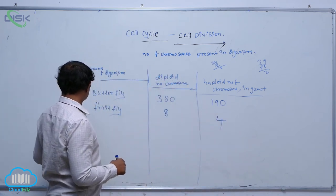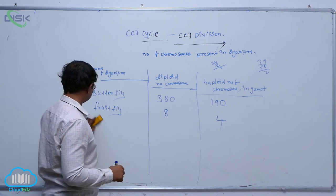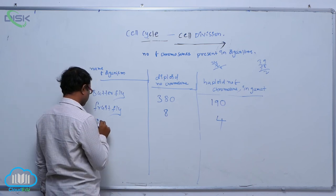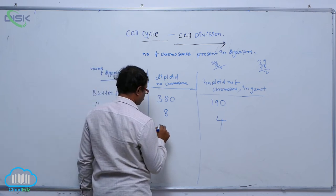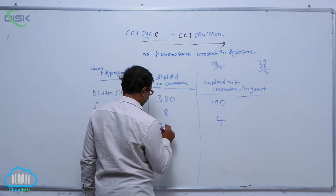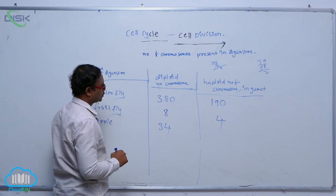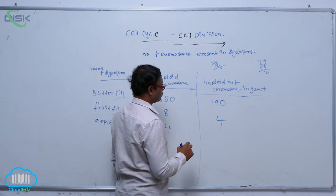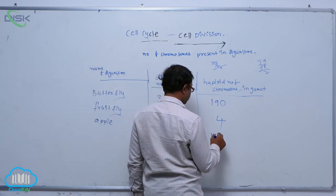In apple, the diploid number of chromosomes is 34, and the haploid number of chromosomes is 17.